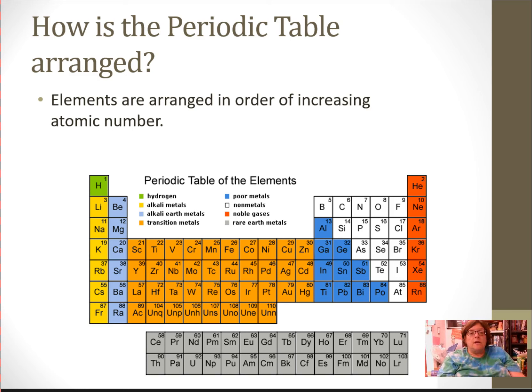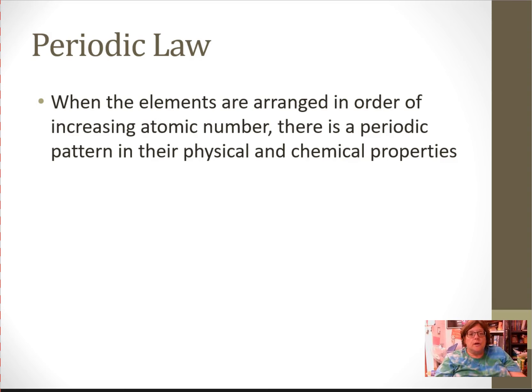Now, the elements are arranged in order of increasing atomic number. Mendeleev did it in increasing atomic mass, although there were a couple spots where the properties didn't fit if he did it by mass. We'll talk about that later. But the proper way now is by increasing atomic number. And this leads us to the periodic law. The periodic law, when the elements are arranged in order of increasing atomic number, there is a periodic pattern in their physical and chemical properties.